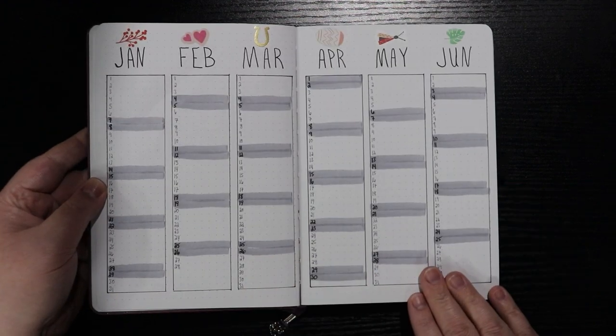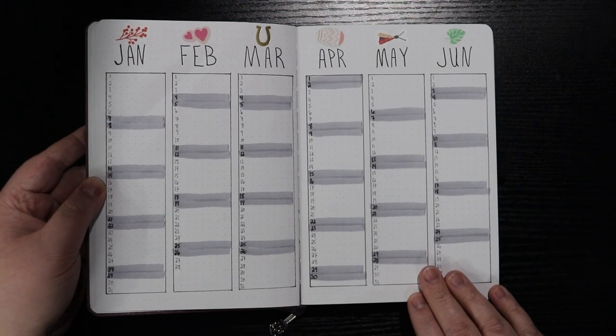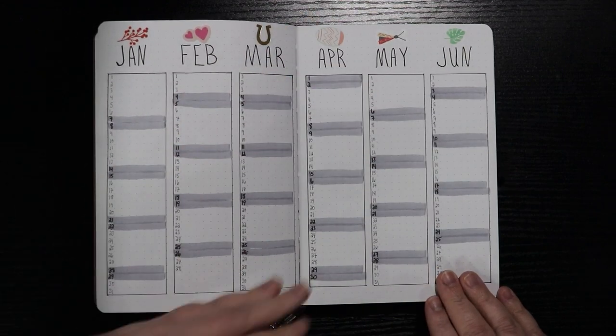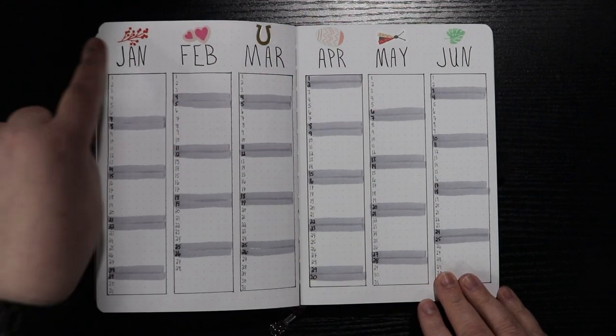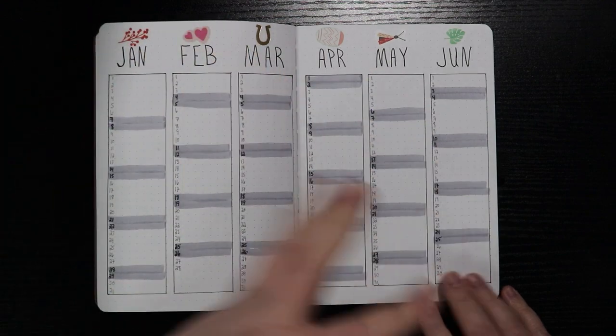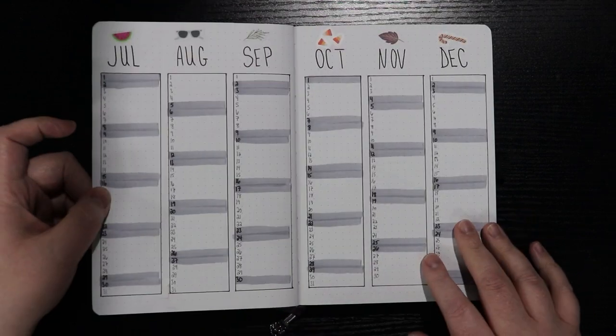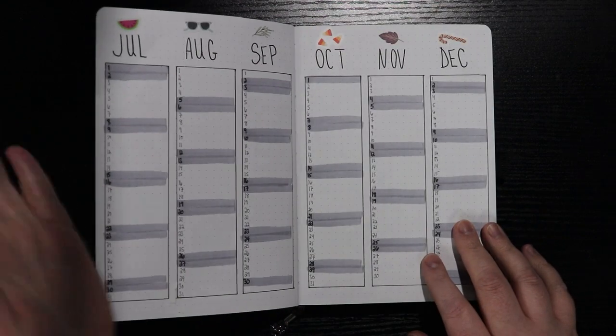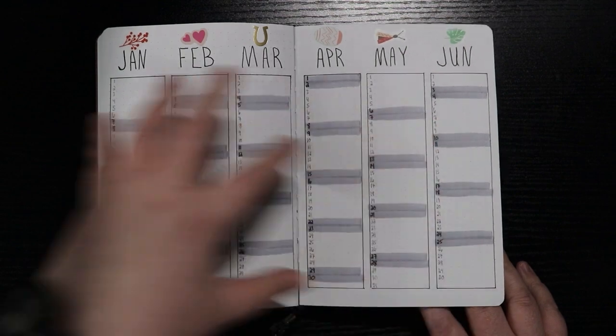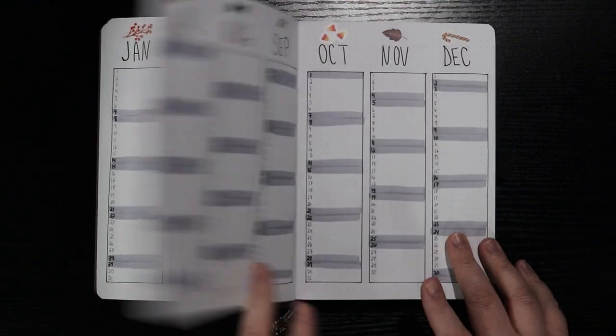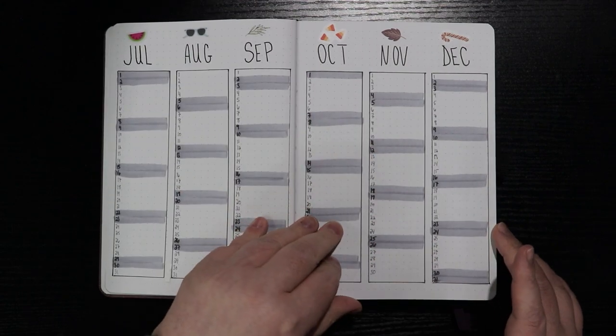I then have a future log, which is essentially just where I wrote out the months and the days of that month so that I can write things in. I put in some little stickers that kind of go with what that month is themed on. All the way through December so I can continue to make plans even though I only intend to have the first six months of the year in this notebook. In June, I may be planning things for December and I may want to have a place to write it down.